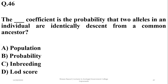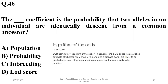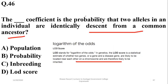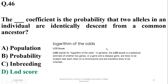Question 46: The coefficient of probability that two alleles in an individual are identically descended from a common ancestor — it is the LOD score (logarithm of the odds). It is a statistical estimate of whether two genes, or a gene and a disease gene, are likely to be located near each other on a chromosome and likely to be inherited together. So I think D is the right option.